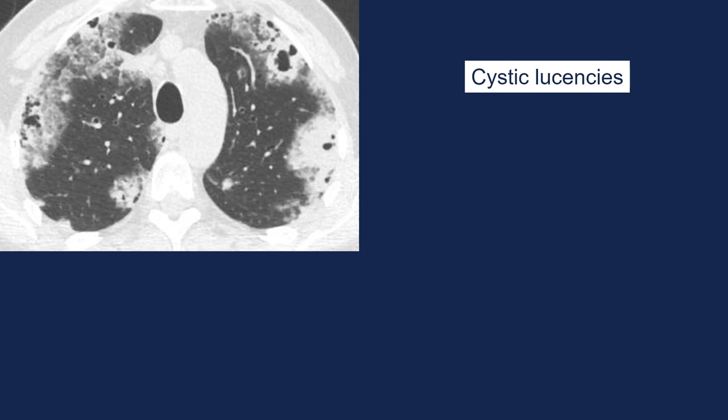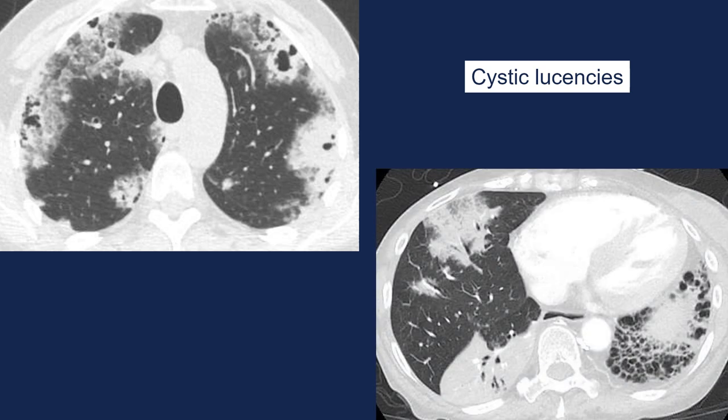Cystic lucencies are not infrequently seen — sometimes thin-walled, sometimes thick-walled. In our patient, these cystic lucencies were getting worse along with the tumor getting worse, so they were presumed to be due to the tumor. The mechanism is not entirely clear, but cystic lucencies can certainly be seen in association with the other findings of invasive mucinous adenocarcinoma, particularly consolidation and ground glass opacity.